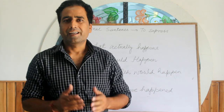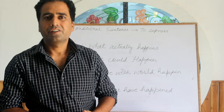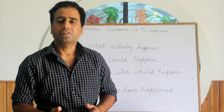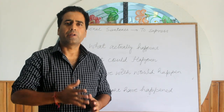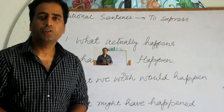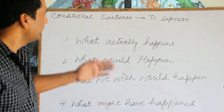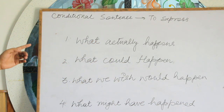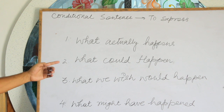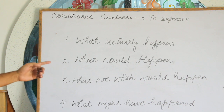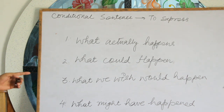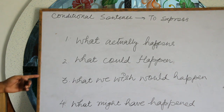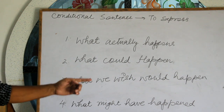In grammar, you know there are rules, there are exceptions — sometimes they apply, sometimes they don't. We use conditional sentences to express what actually happens, what would happen, what we wish would happen, and what might happen.